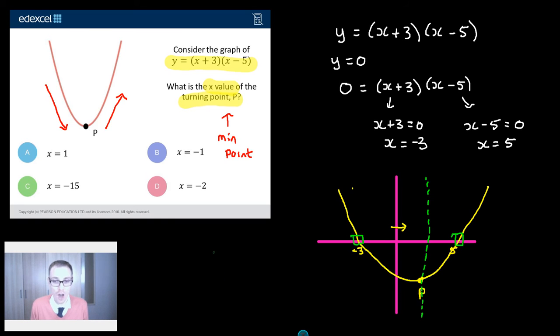So it's halfway between minus 3 and 5. How do we find the number that's halfway between two numbers? How do we find the midpoint? Well I like to add them together and halve my answer. There's lots of other ways but that's my favourite way. Minus 3 plus 5, minus 3 add on 5 I think is 2 divided by 2 and that's going to give me 1.